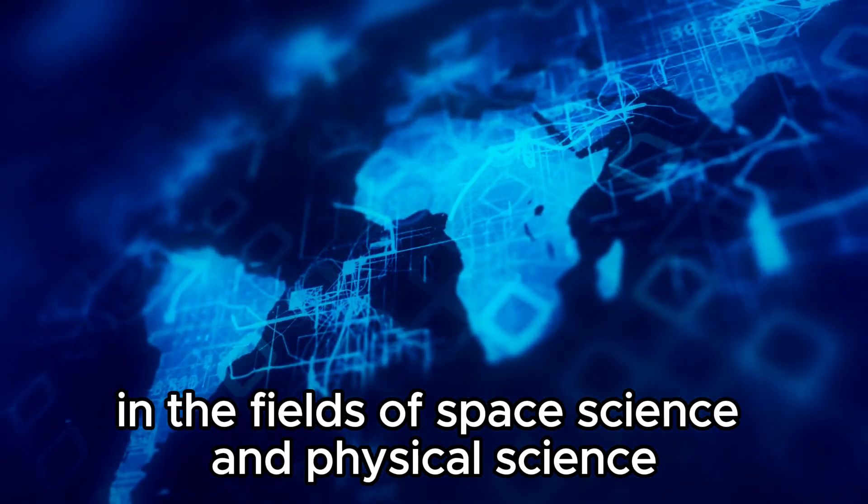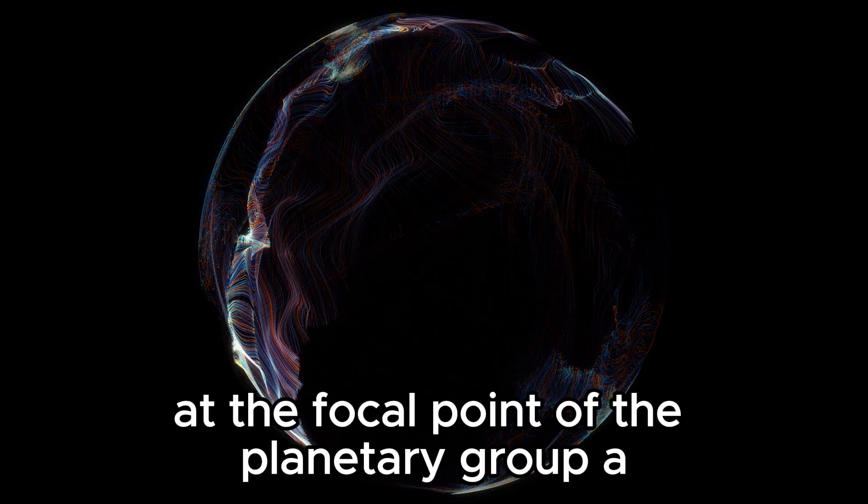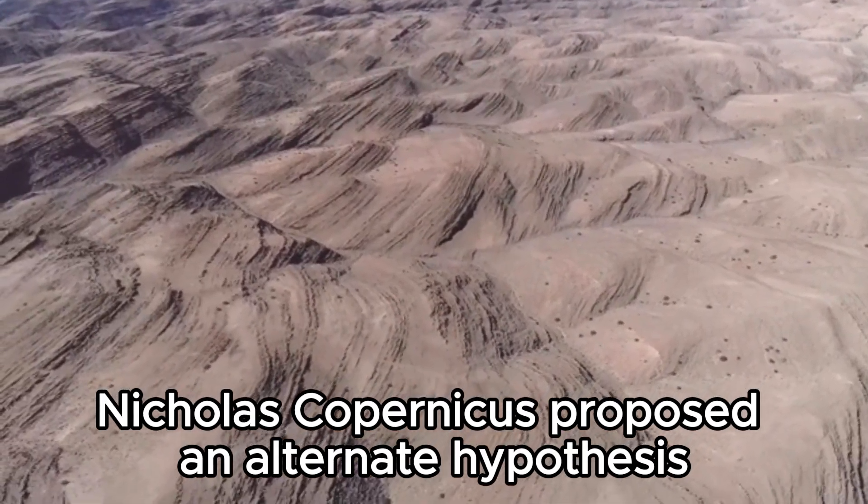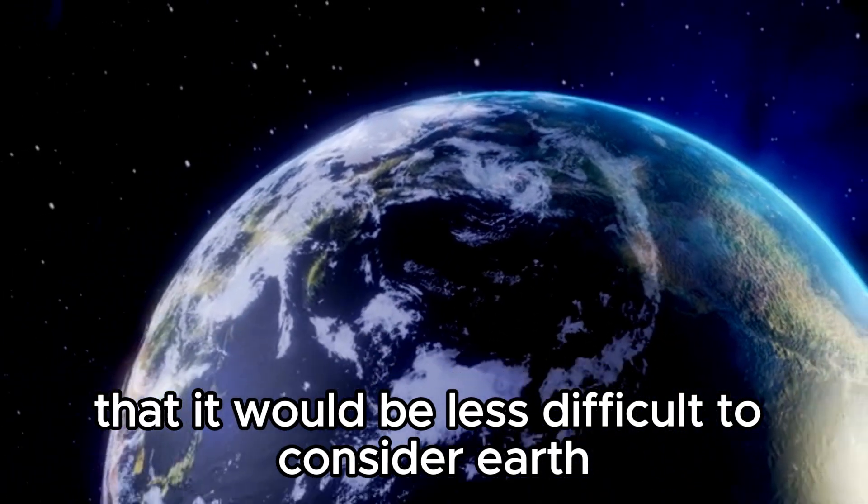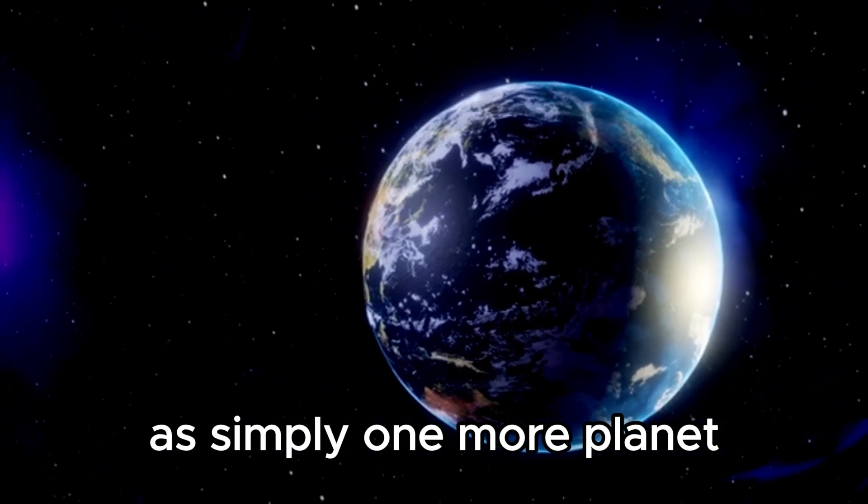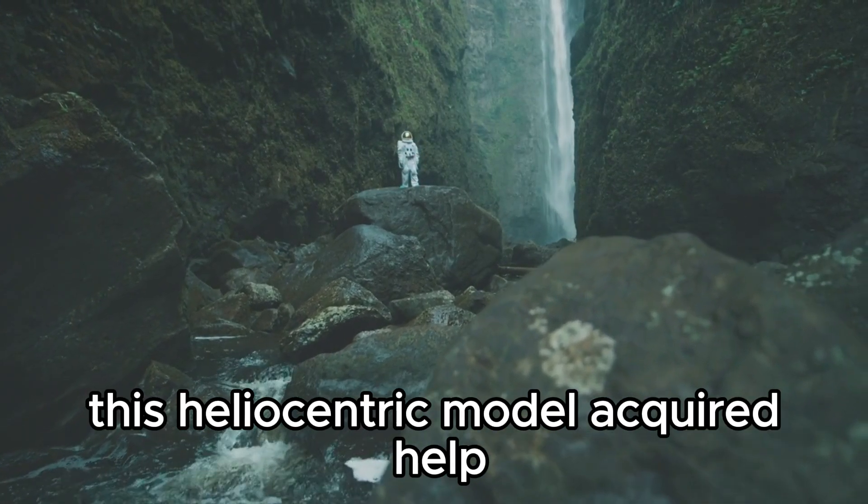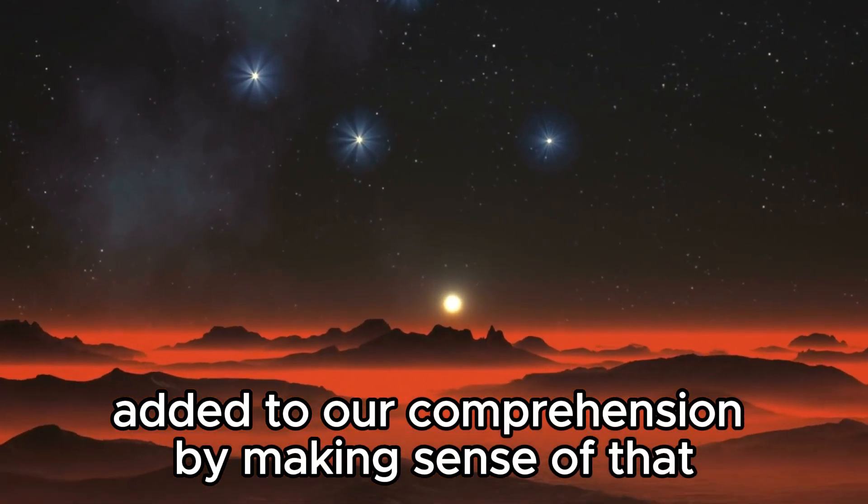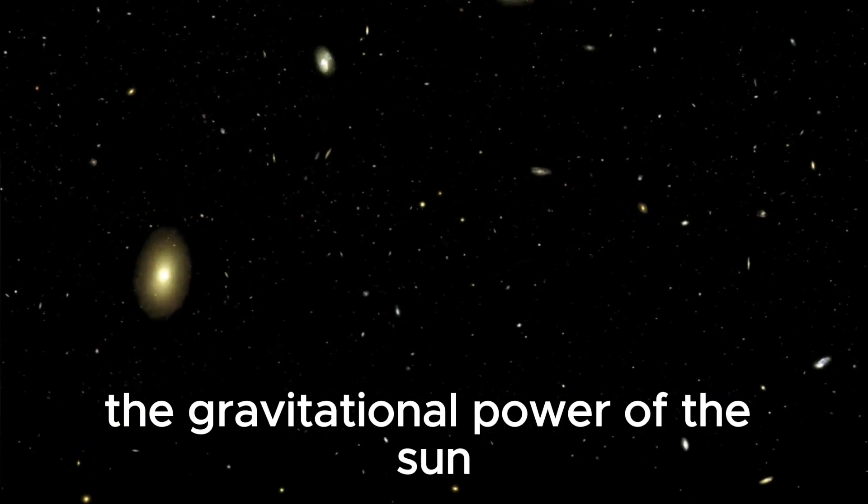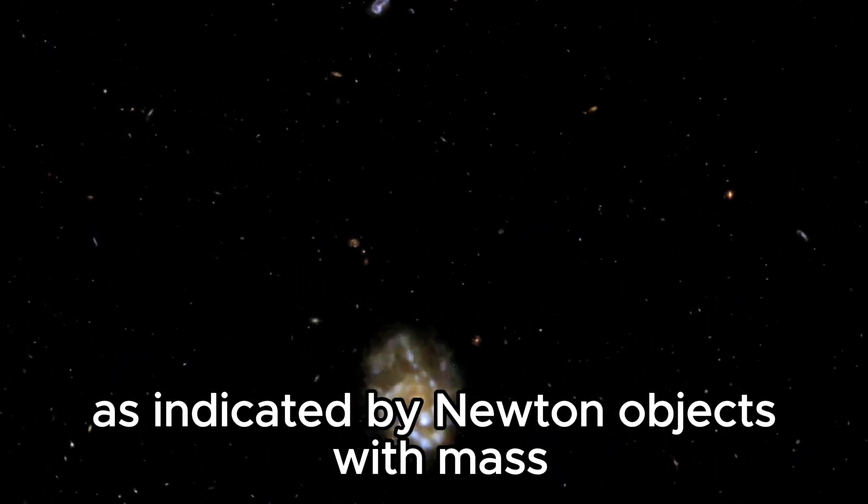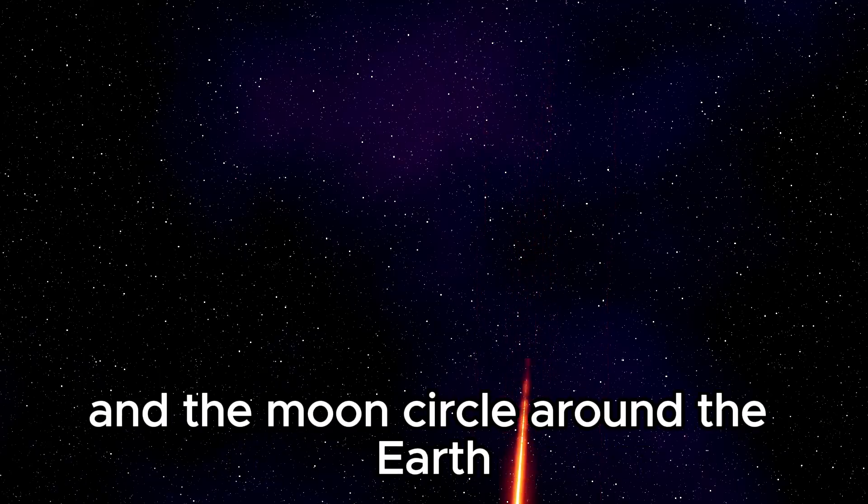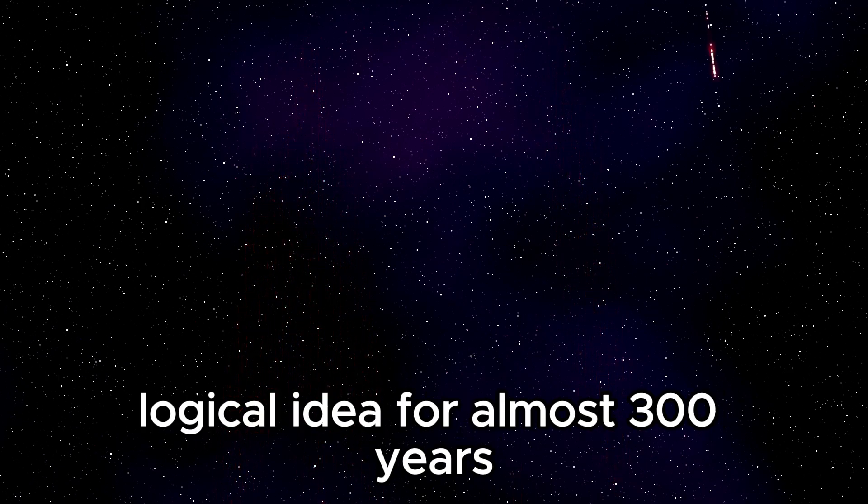At first, humankind believed that Earth was at the focal point of the planetary group, a conviction that endured for over a thousand years. Anyway, Nicholas Copernicus proposed an alternate hypothesis, recommending that it would be less difficult to consider Earth as simply one more planet circling the sun. Notwithstanding beginning obstruction, this heliocentric model acquired support with the appearance of telescopes. Isaac Newton likewise added to our comprehension by making sense of that the gravitational power of the sun makes planets circle it.